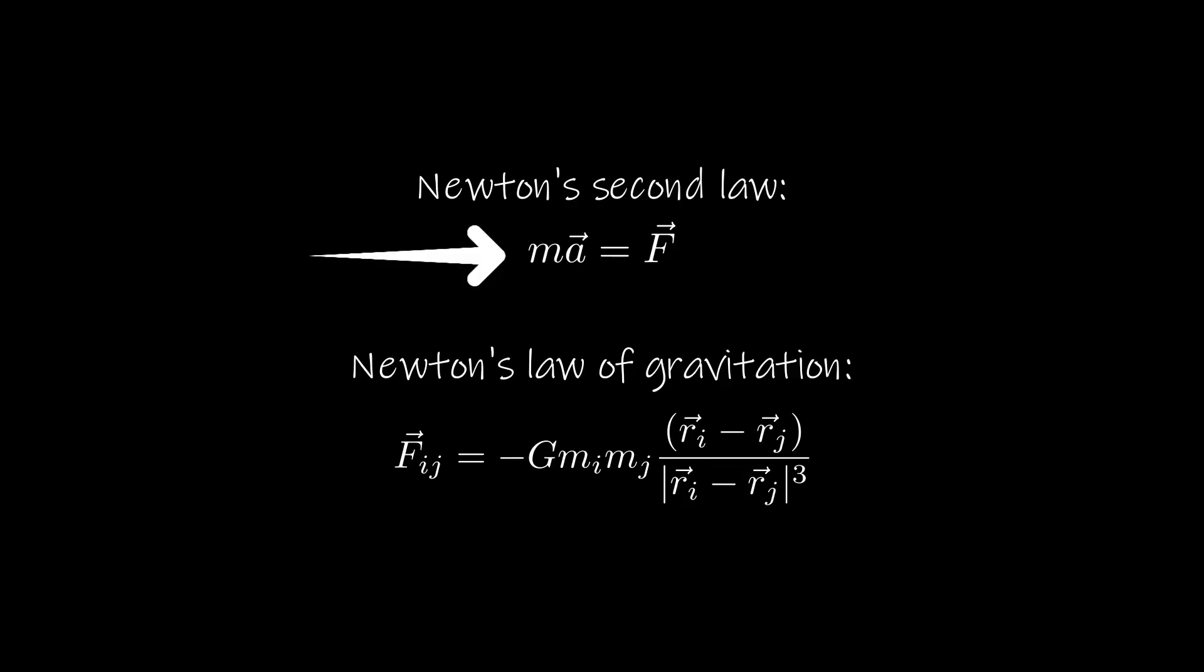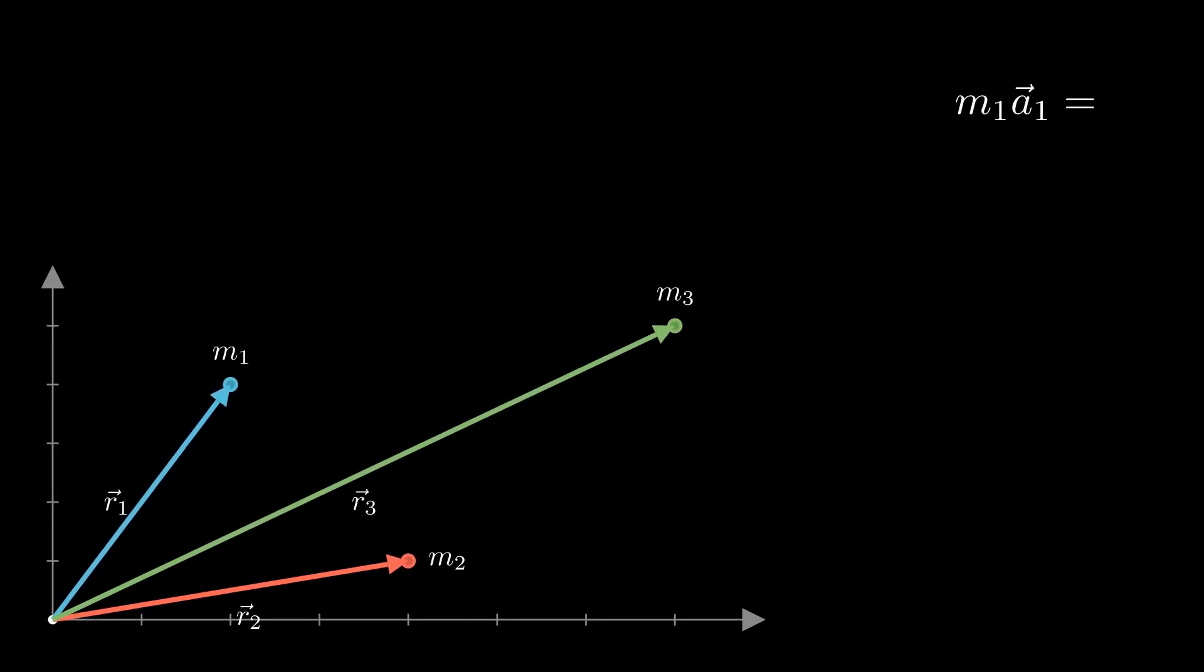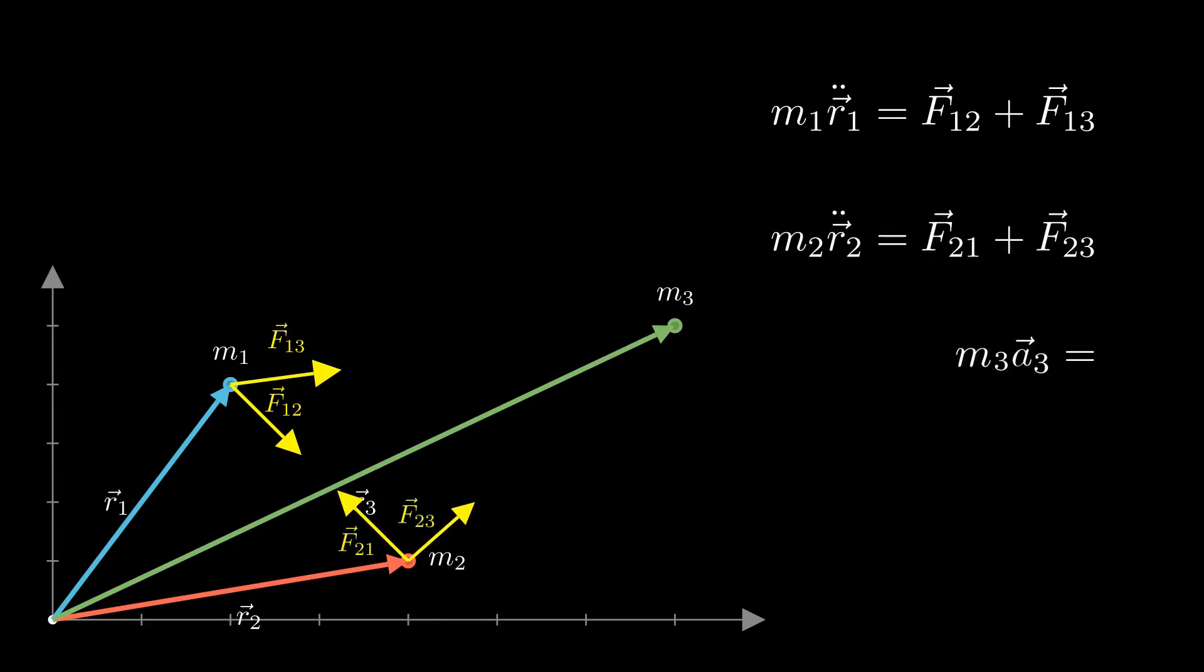Now, Newton's second law states that the mass times the acceleration is equal to the net force acting on that mass. Let's take a look at the first body and apply Newton's second law. So, the left-hand side of Newton's second law is simply the mass times the acceleration, where the acceleration is the second derivative of the position vector with respect to time. And on the right-hand side, we have the net force acting on the body. And in our case, for the first body, this will be the sum of the gravitational attraction from the second body and the gravitational attraction from the third body. Similarly, Newton's second law for the second and third bodies can be written in the same way, with each one experiencing gravitational forces due to the other two bodies.